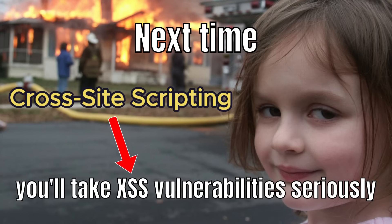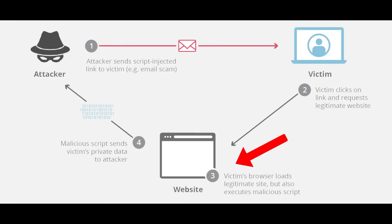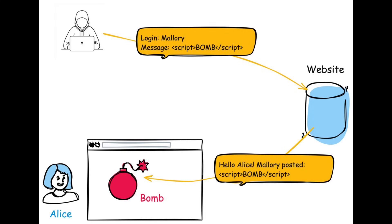XSS, or cross-site scripting, is a common web security vulnerability in which an attacker injects malicious client-side code, usually JavaScript, into a webpage that is then executed by another user's browser. The browser, trusting the website, executes the injected code as if it were legitimate. This happens because the website fails to properly handle untrusted input and output, allowing attacker-controlled data to reach the victim in a way that the browser interprets as safe.